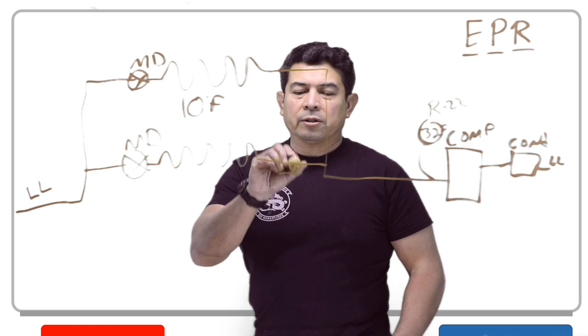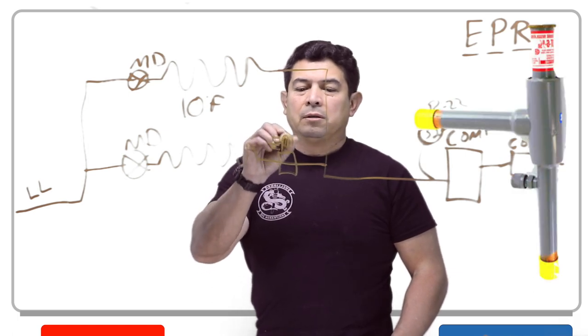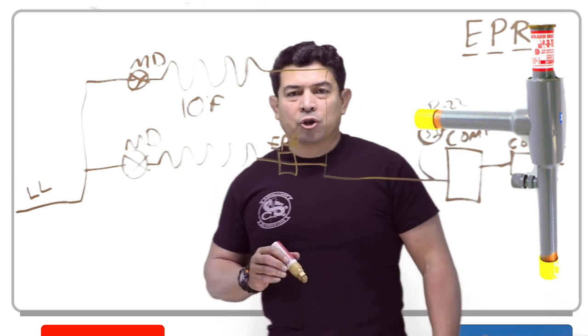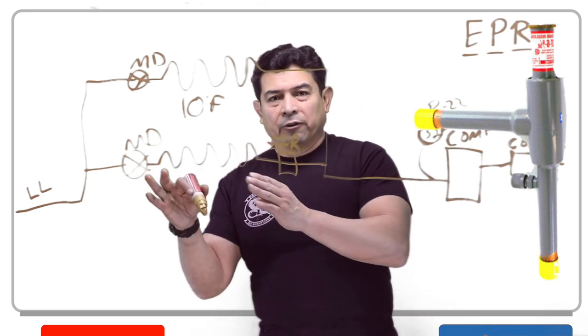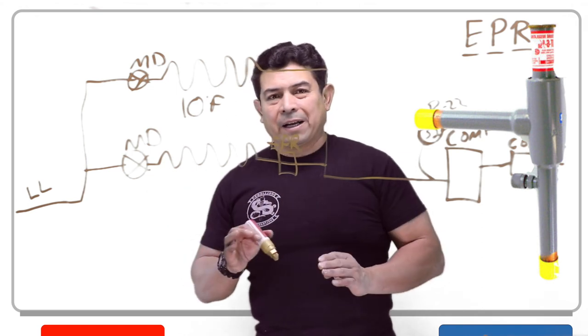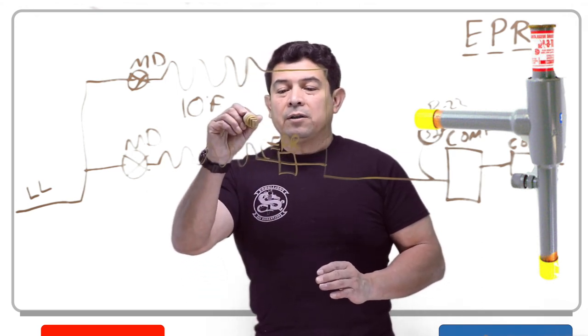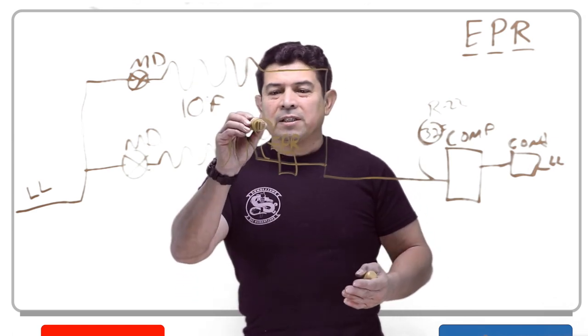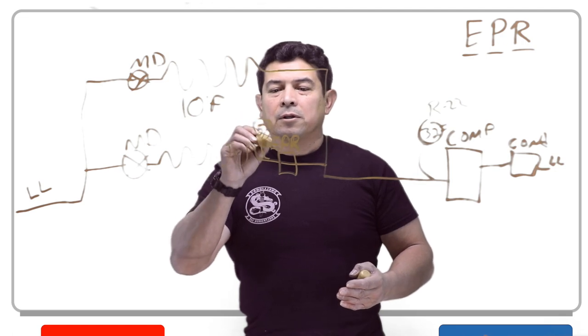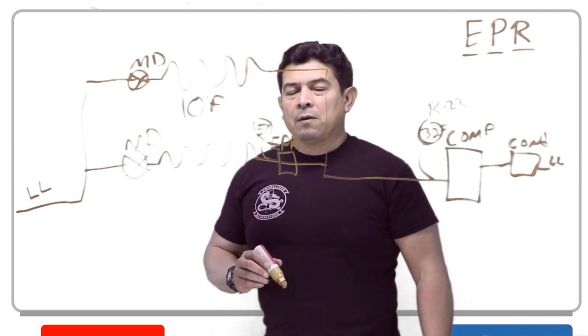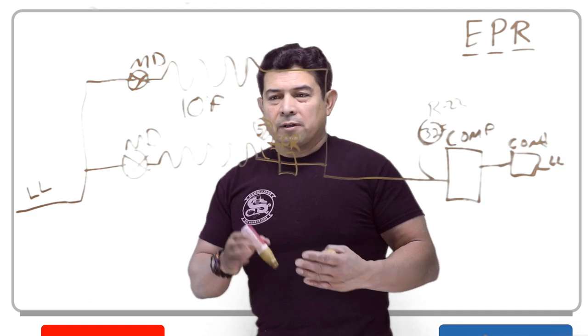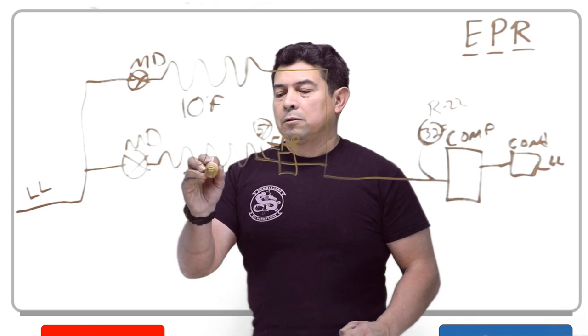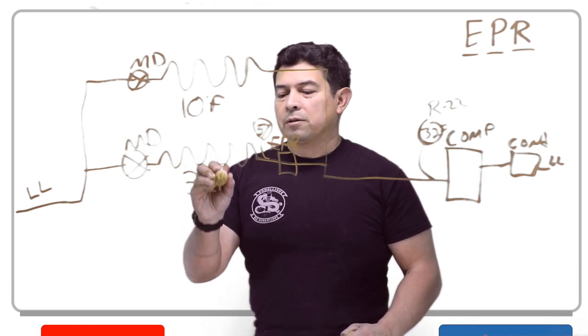So what we're going to do is put an EPR valve right here. This evaporator pressure regulating valve is going to back up the refrigerant, back up the pressure in here. We're going to maintain this pressure at 57 PSIG. When we look this up in the PT chart, 57 cross-references to 32 degrees Fahrenheit.